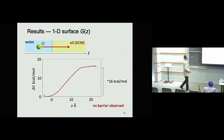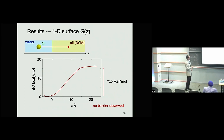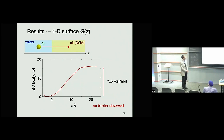First, we focus on the conventional one-dimensional free energy surface as a function of the Z coordinate. This is consistent with previous works. The free energy of transfer is calculated to be 16 kcal/mol, which is reasonably consistent with experiment. We see no barrier in the 1D surface, which is also consistent with earlier studies.